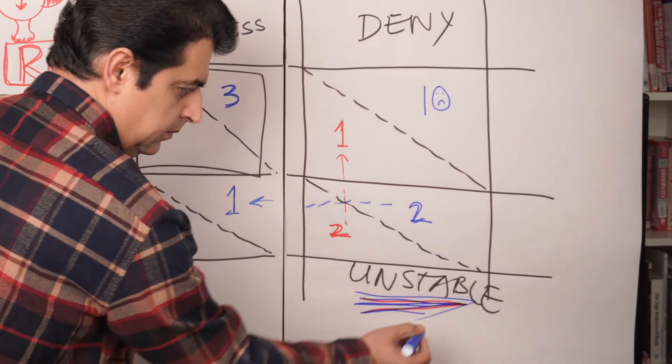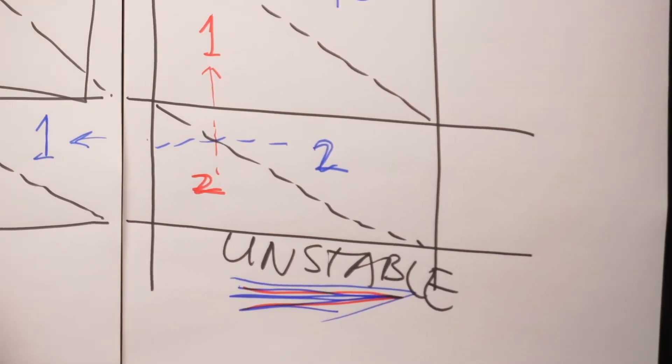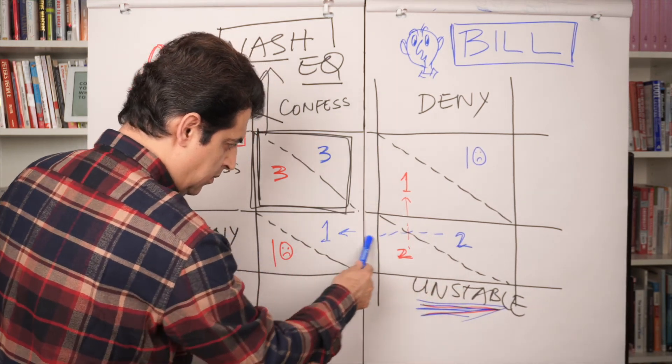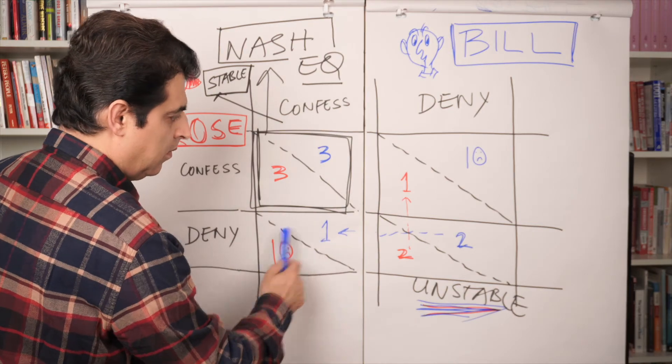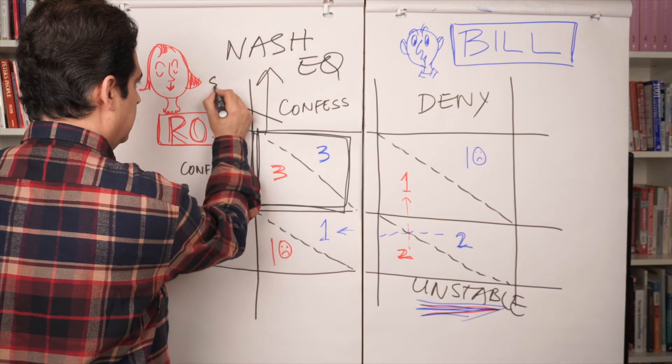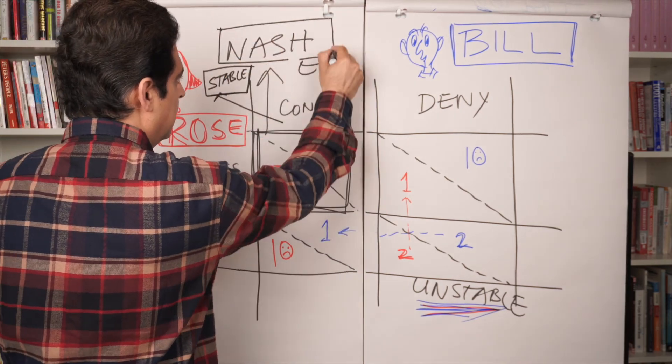The biggest problem is that the silent/deny quadrant is very unstable, because Bill or Rose could attempt to move to other quadrants to maximize their benefits. Neither Bill nor Rose wants to take chances — they prefer to choose an option where they have more control over the outcome of their decision. Therefore, they both choose the most stable state, also called the Nash equilibrium, in which both get 3 years of jail.